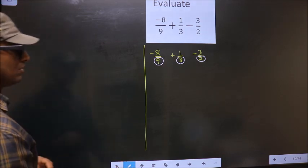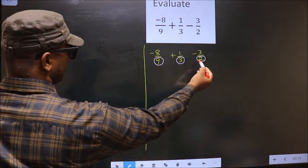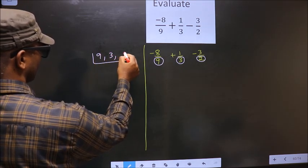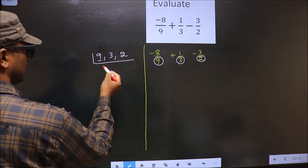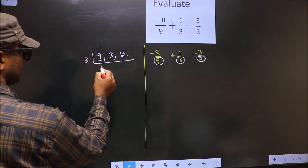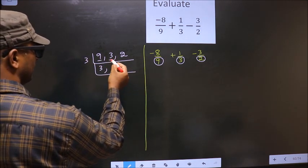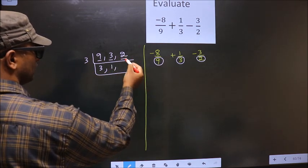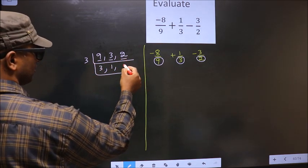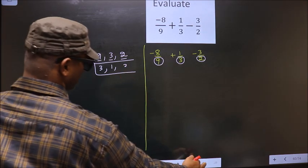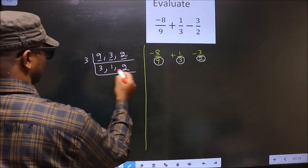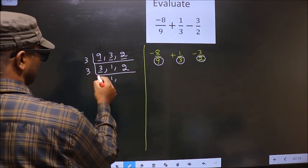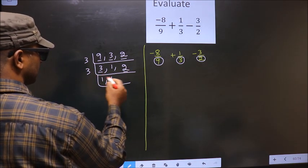So the LCM of 9, 3 and 2. The first number is 9. 9 is 3, 3 is 9. The other number 3. When do we get 3 in 3 table? 3, 1 is 3. The other number 2. 2 not divisible by 3, so you write down as it is. Now here we have 3. 3 is the prime number, so 3, 1 is 3.